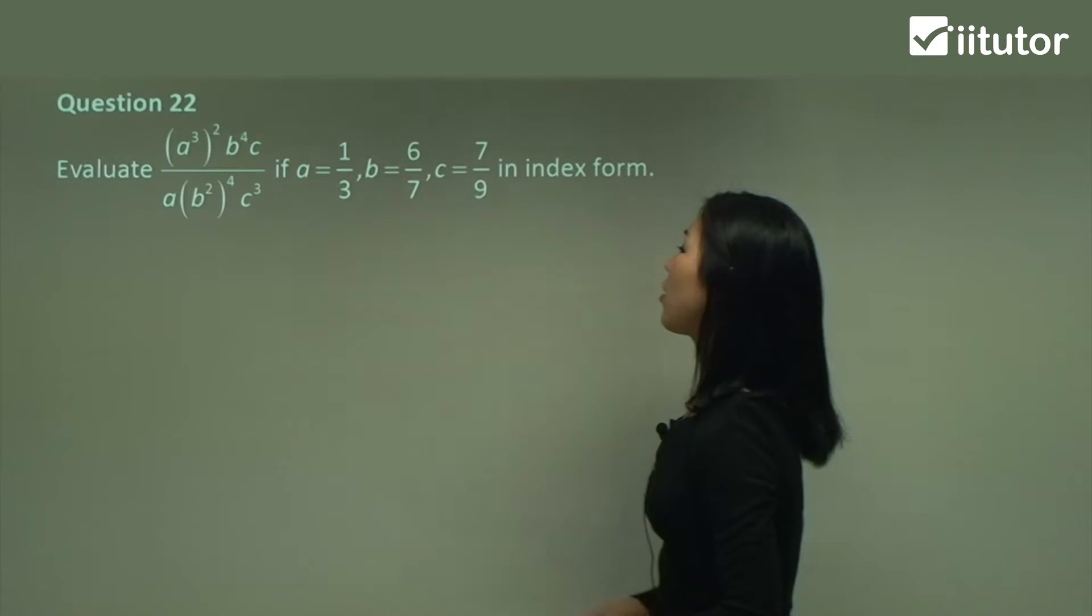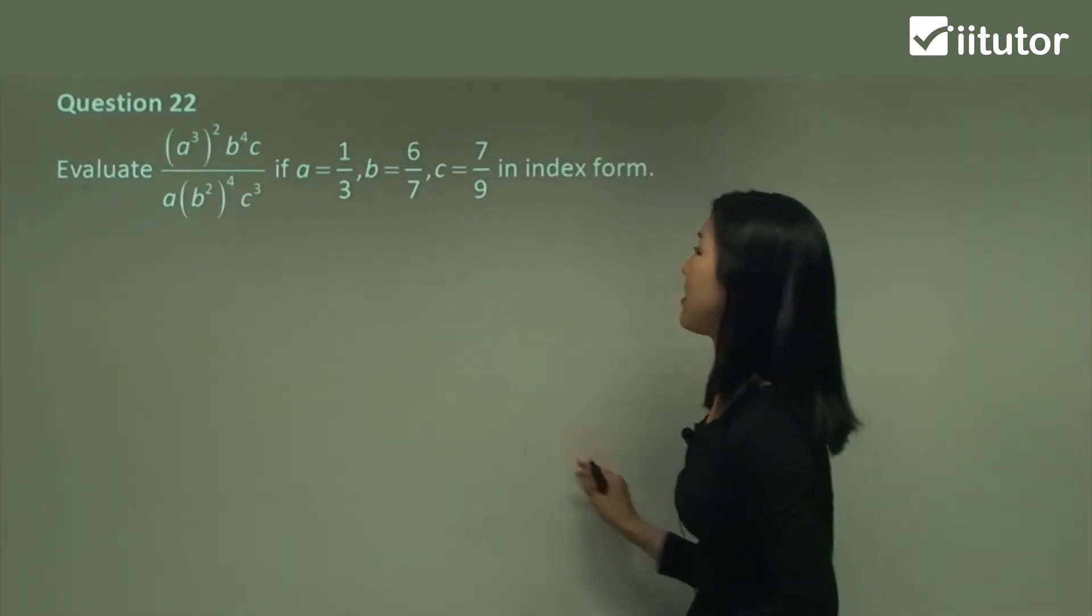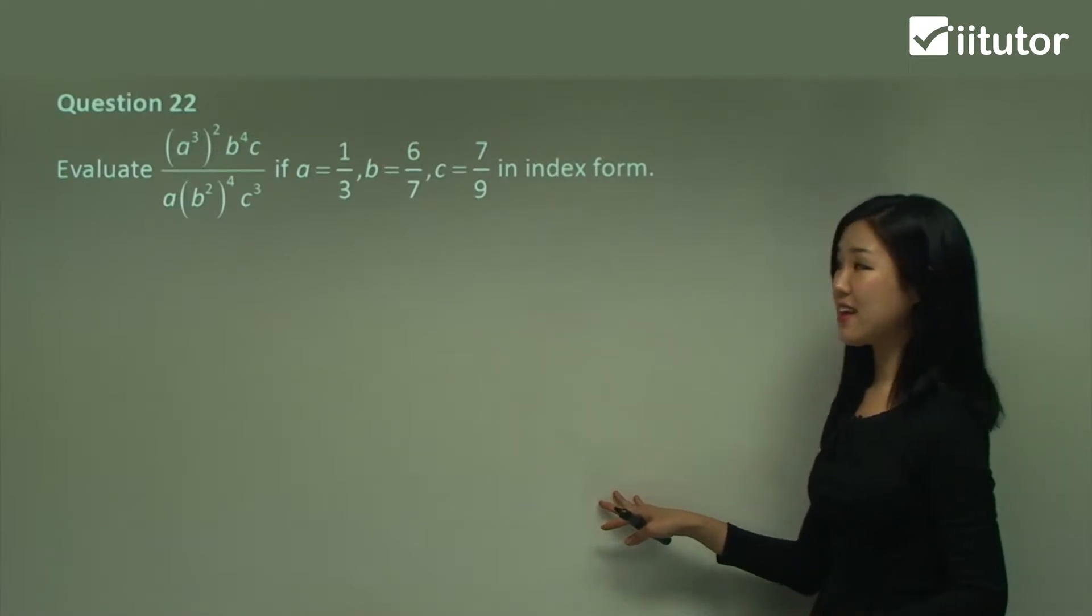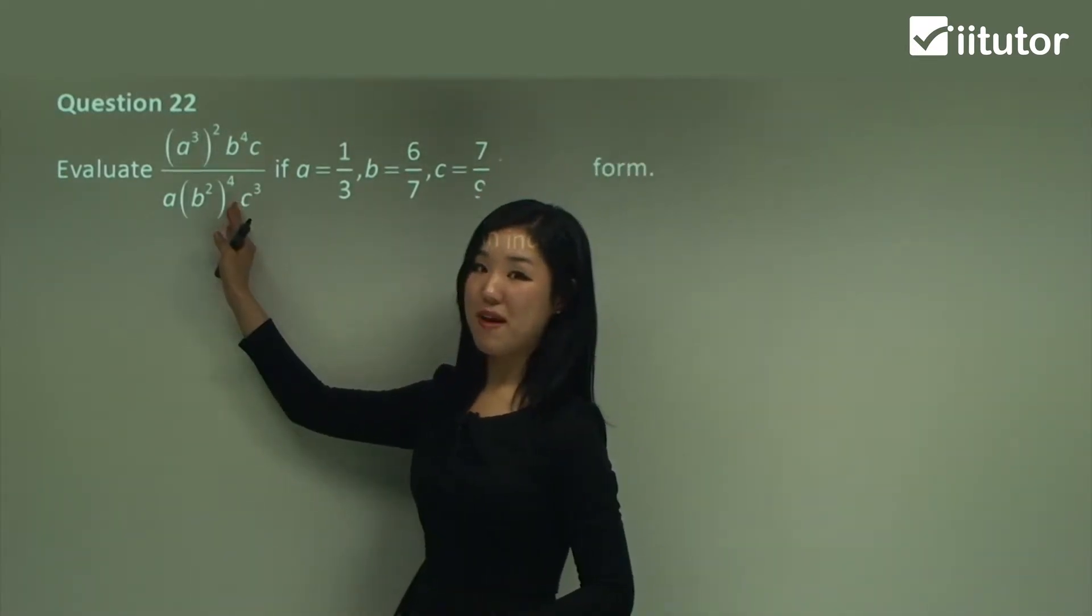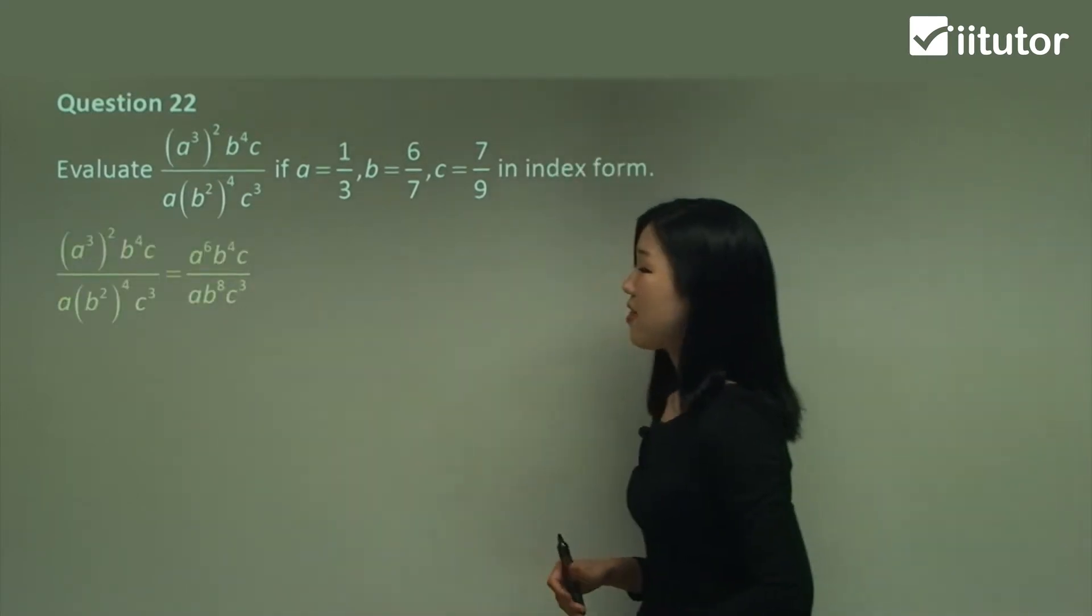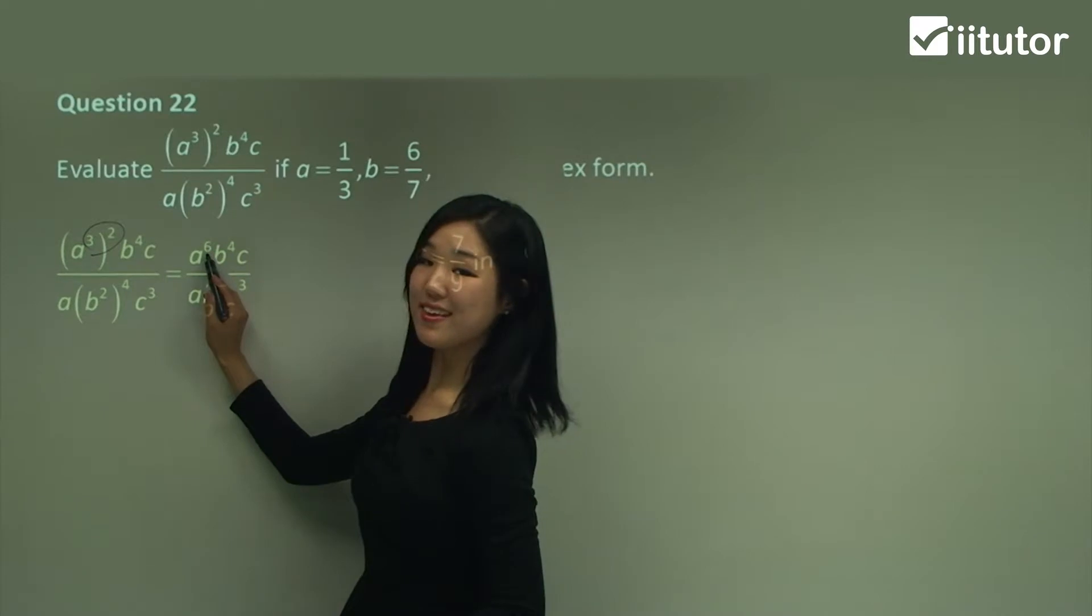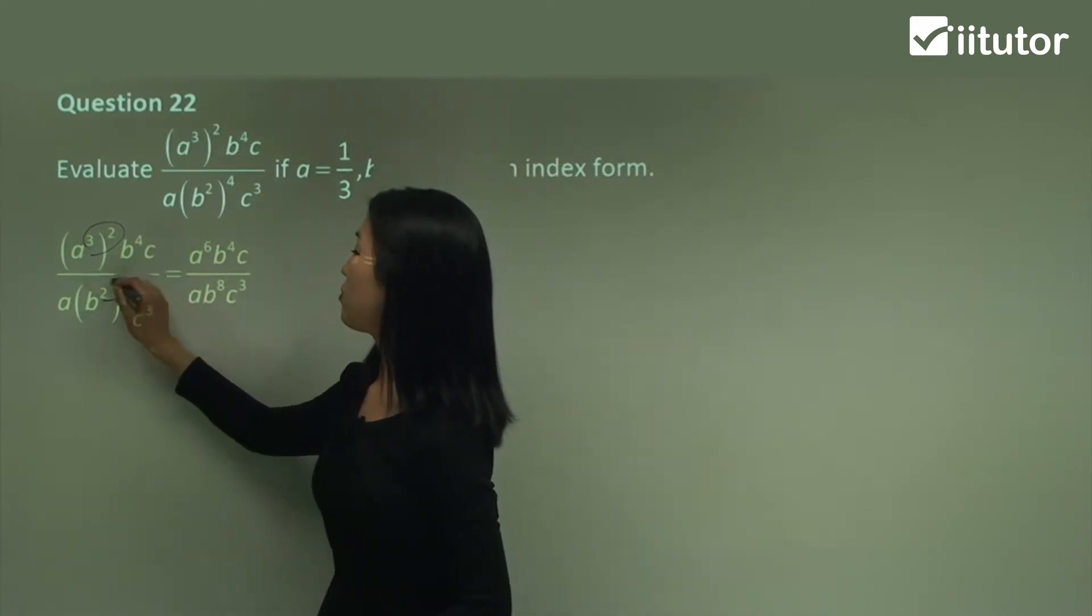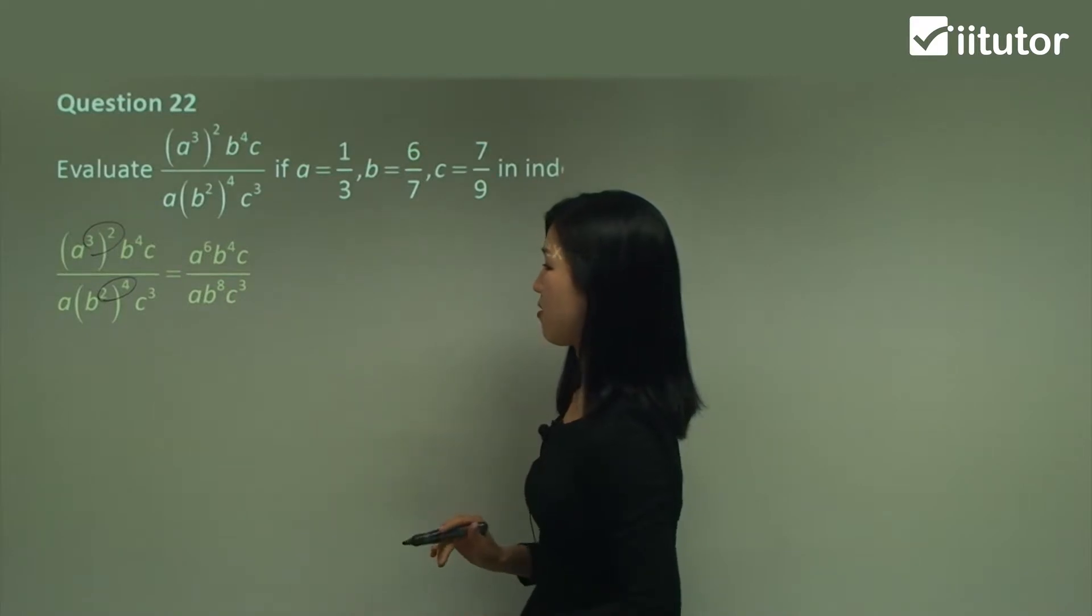Question 22. Again, we have quite a big fraction here. And they give us what A, B and C are. And again, we want to leave it in index form. Before we do anything, let's simplify this big, massive fraction. So that's going to become, see how we can multiply these two together and make 6. And again, we can multiply these together to make 8. So we get rid of the brackets because the brackets are annoying us.